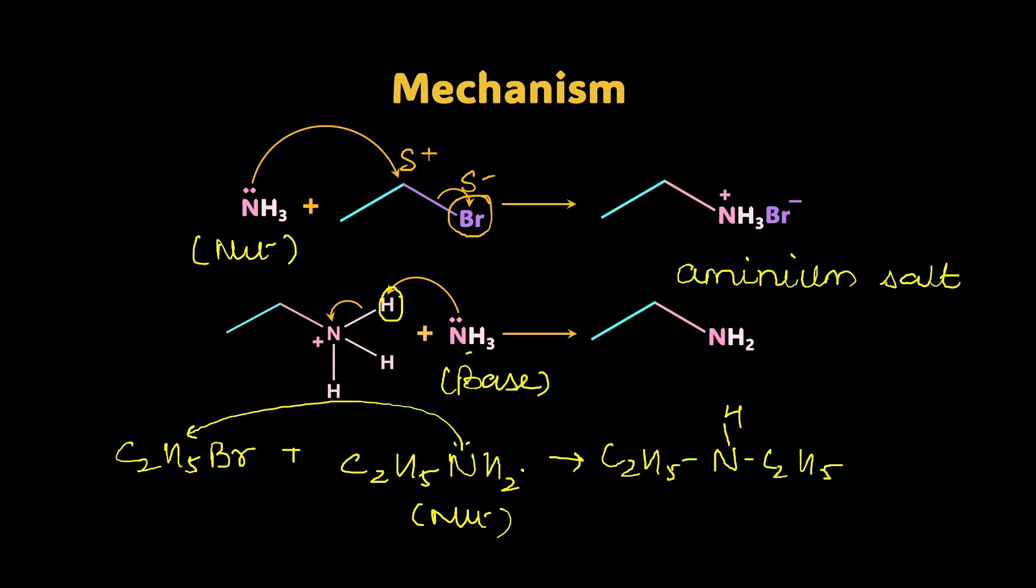Now this journey doesn't end here. It has a lone pair still. So it can act like a nucleophile for another alkyl halide, isn't it? So another ethyl bromide is all set for ammonolysis. Who is stopping? So what you will get now is a tertiary amine. Similarly, you can get a quaternary amine. You understand the problem? There are multiple products possible.